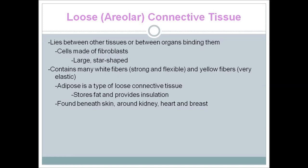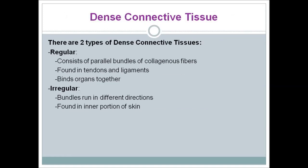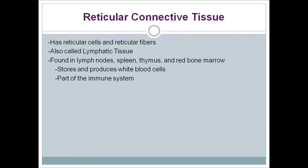Adipose is a type of loose areolar connective tissue; it stores fat and provides insulation, and is found beneath the skin, around the kidneys, heart, and breasts. The second type is dense connective tissue, which has two subtypes: regular, consisting of parallel bundles of collagenous fibers found in tendons and ligaments, and irregular, where bundles run in different directions and is found in the inner portion of the skin.